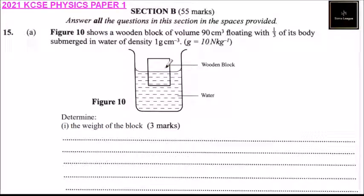This is section B, consisting of 55 marks. Answer all the questions in the spaces provided. Question number 15A: Figure 10 shows a wooden block of volume 90 centimeter cube floating with a third of its body submerged in water of density 1 gram per centimeter cube, and the gravitational force is 10 newtons per kg. We have our diagram - this is the wooden block, a third of it is submerged, two thirds above water. Determine the weight of the block.